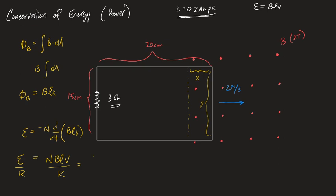So one loop, magnetic field 2, length 0.15, velocity 2, resistance 3, 0.2 amps.